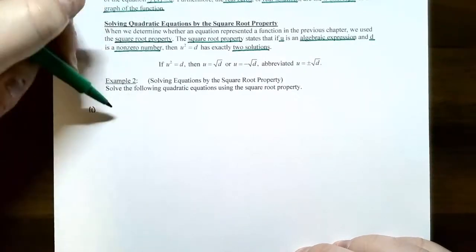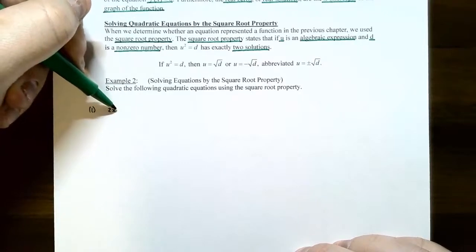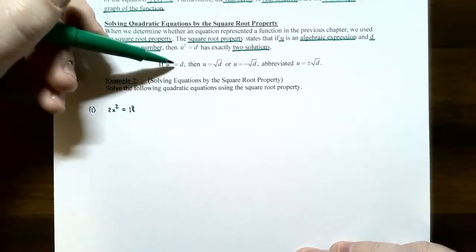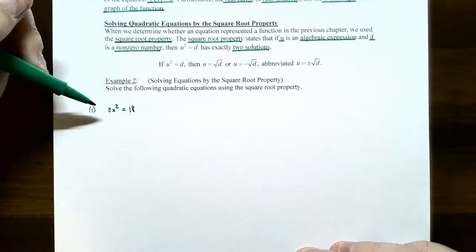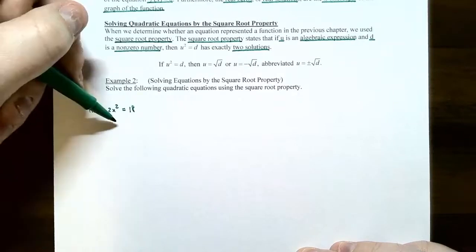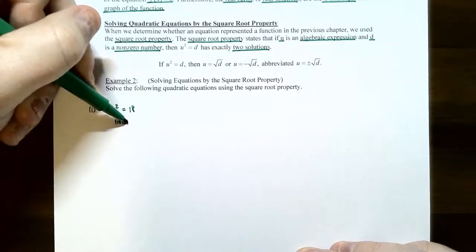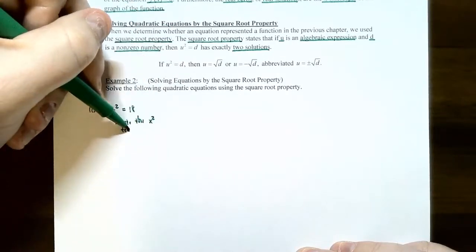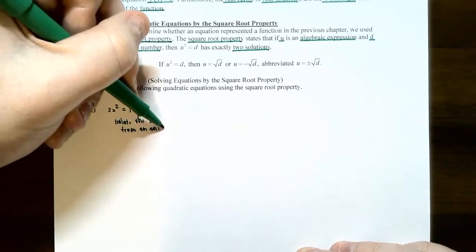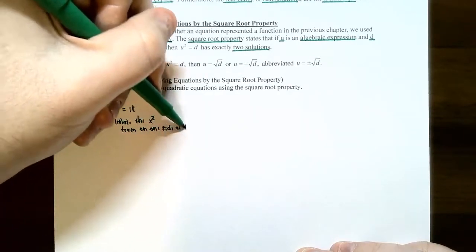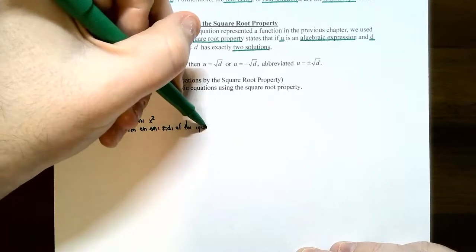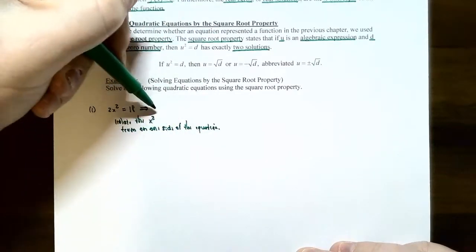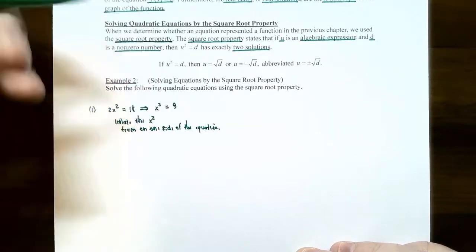Let's do a few examples using the square root property to solve quadratic equations. Number one: solve 2x squared equals 18. You can't use the square root property unless one side of the equation is already being squared. Notice that x is being squared but the 2 is not, so isolate the x squared term on one side. Divide both sides of the equation by 2, and you get x squared is equal to 9.